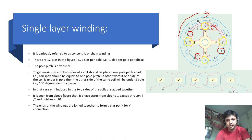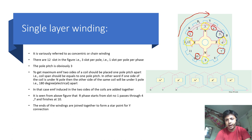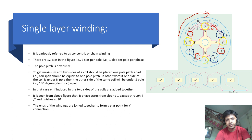Blue phase starts 120 degrees electrical from Y-phase, that is starting from slot number 5. It goes through slot number 8, then 180 degrees electrical to slot number 11, and finishes at slot number 2. This completes the single layer winding.